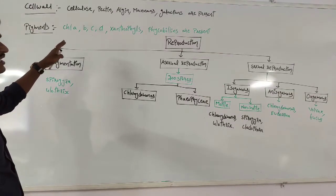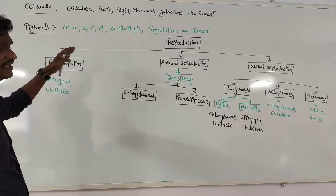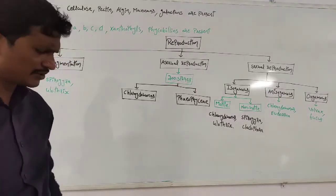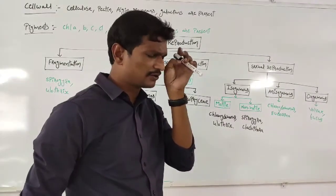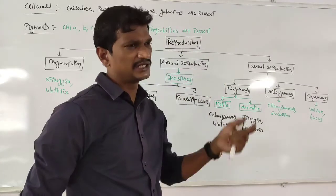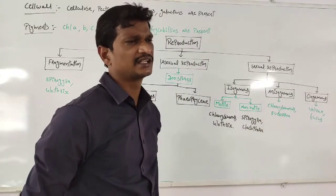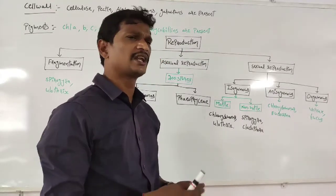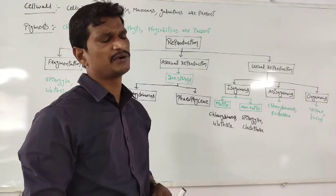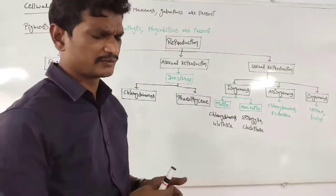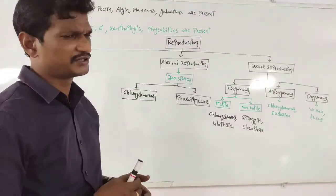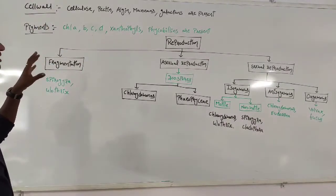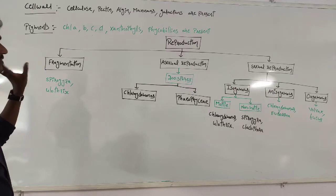The pigments: in Chlorophyceae, chlorophyll A and B are present. In Phaeophyceae, chlorophyll A and C are present. In Rhodophyceae, chlorophyll A and D are present. So the pigments differ from one type of algae to another. Chlorophyll A is common to all, but the additional pigments differ — chlorophyll B, C, or D — depending on the algal group.